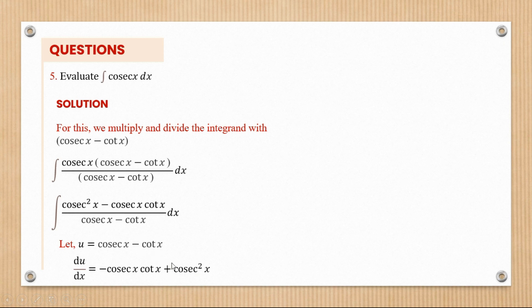Now it will affect this sign and we'll have a plus, and that's why we have it like that. If we make dx the subject, dx equals du over cosec squared x minus cosec x cot x.